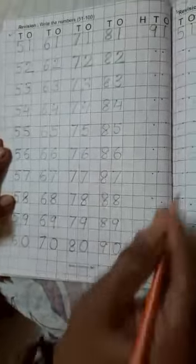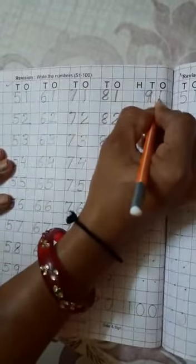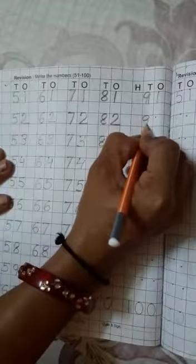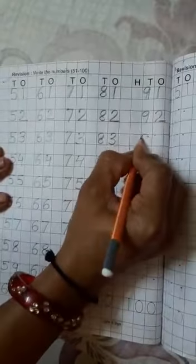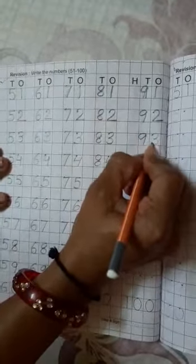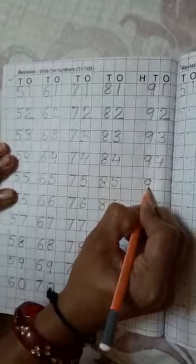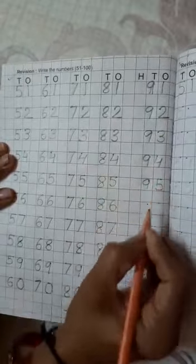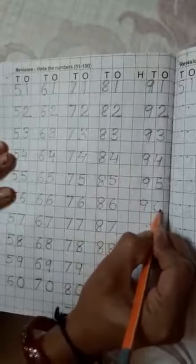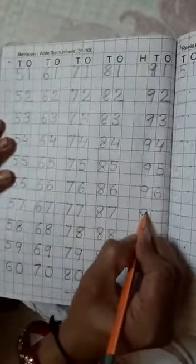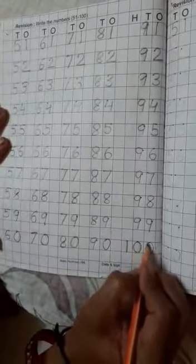अब 9 की लाइन स्टार्ट करेंगे. 9, 1, 91. 9, 2, 92. 9, 3, 93. 9, 4, 94. 9, 5, 95. 9, 6, 96. 9, 7, 97. 9, 8, 98. 9, 9, 99. 1, 0, 0, 100.